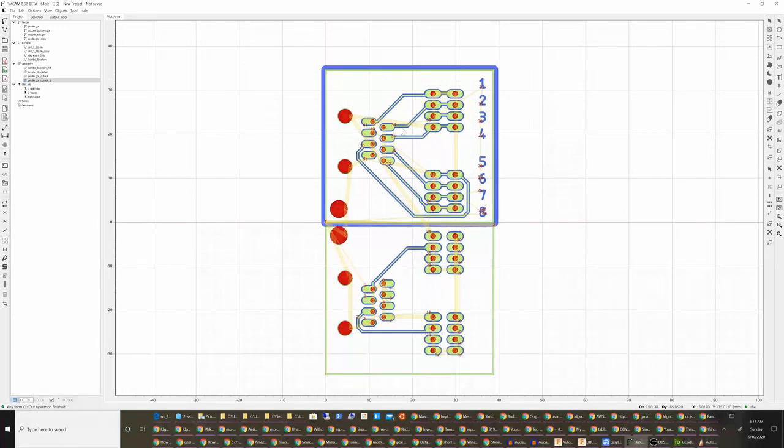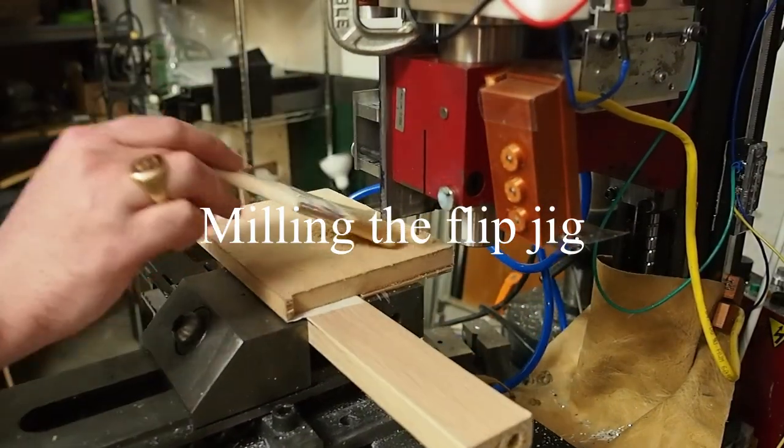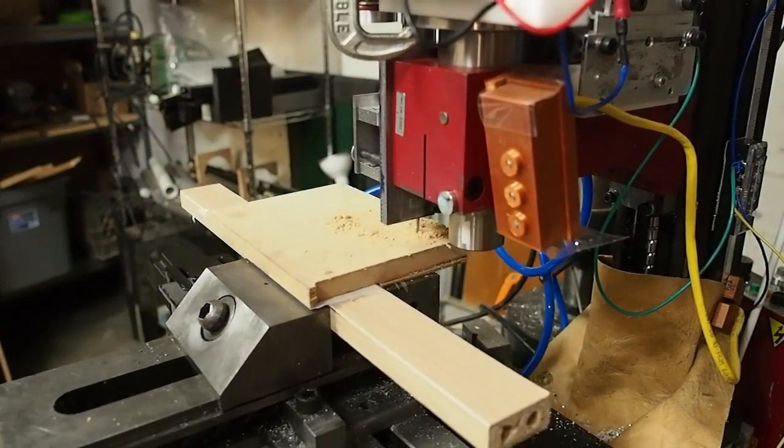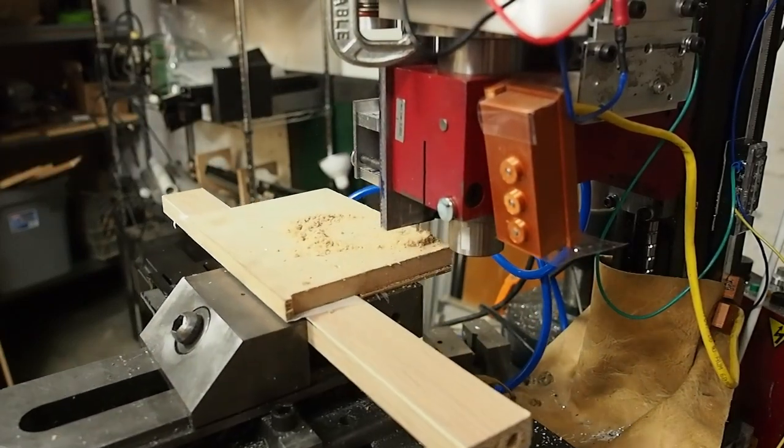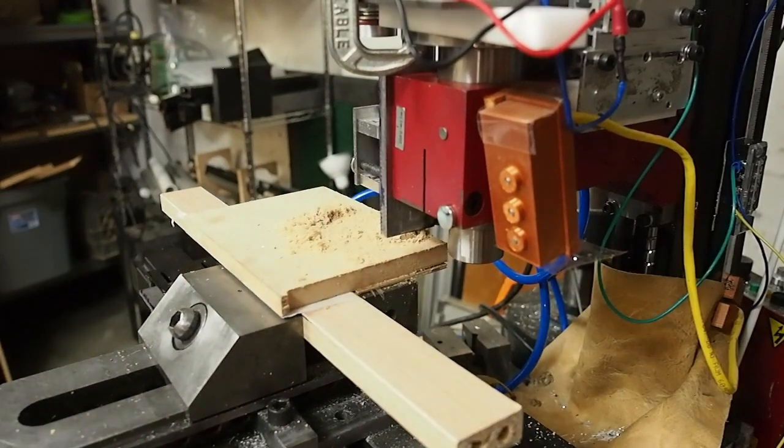So you'll drill, cut the traces, and flip it. This side will go up here and this side will go down here. And you re-cut the traces. You don't have to drill again. And you should have a mirrored board.